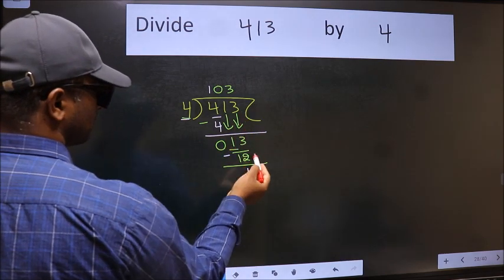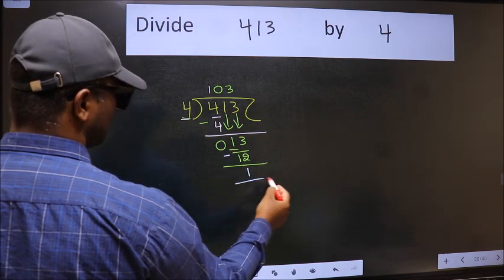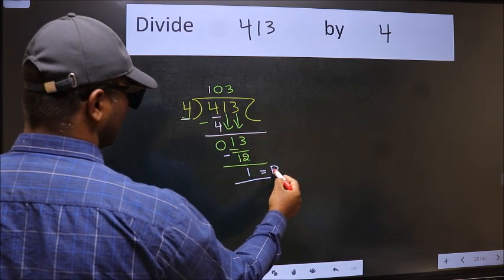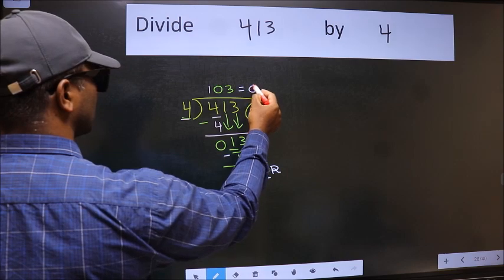No more numbers to bring it down. So we stop here. This is our remainder and this is our quotient.